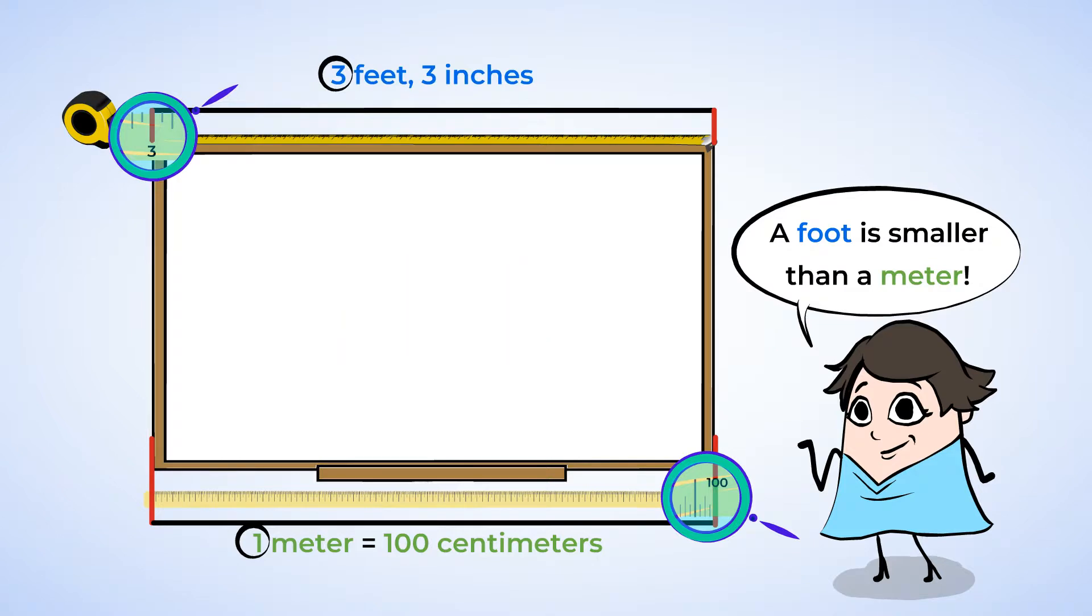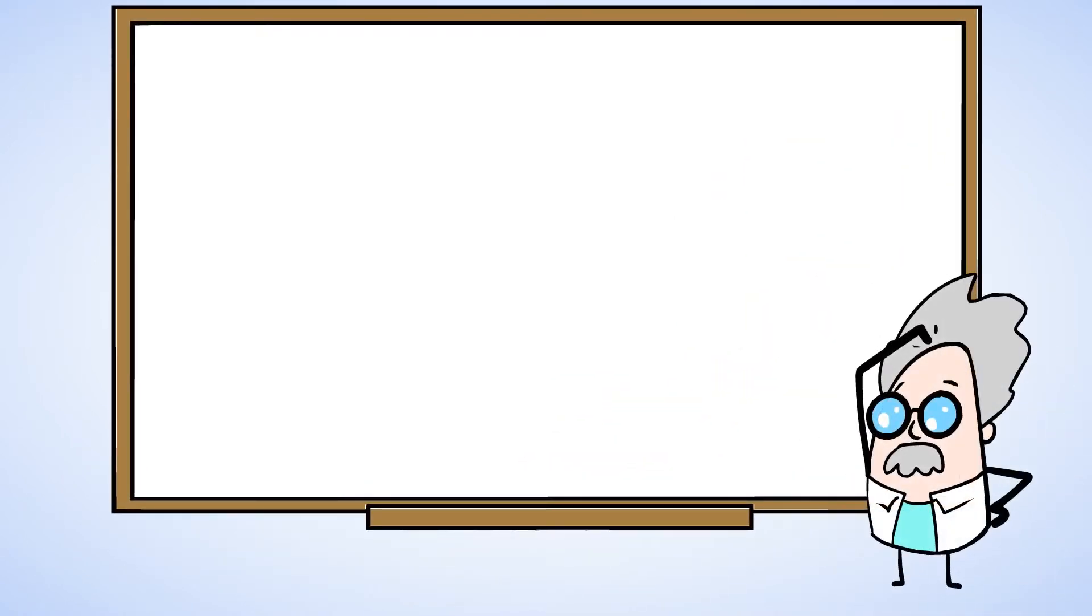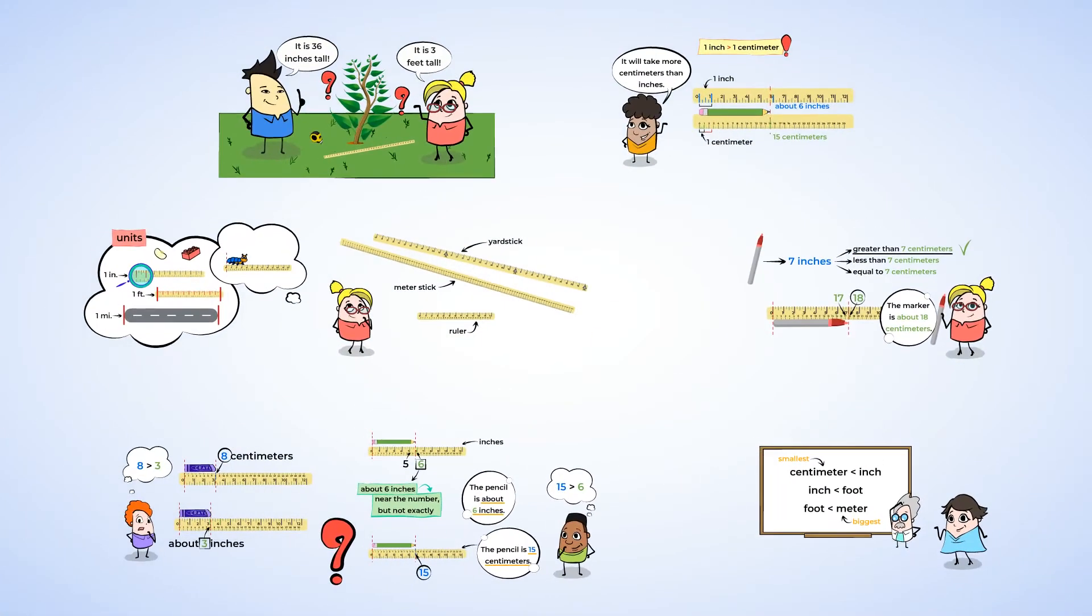Whew! Let's review all of these units because there have been a lot. Cool! Good thing we have this whiteboard. We can just write it all down here. We know that a centimeter is smaller than an inch. Since 12 inches make up a foot, an inch is smaller than a foot. And we just learned that a foot is smaller than a meter. Great work today! You've gotten to measure objects using different units. And you've figured out why you have to use a different number of units to measure the same object.